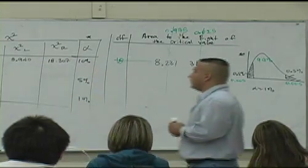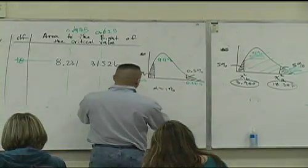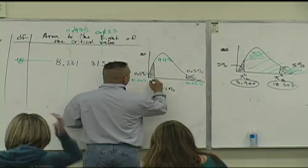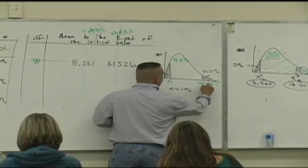All right, we're practically there. This is your chi-square L value. This is your chi-square what? R value.